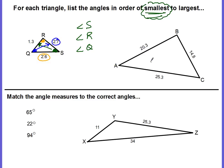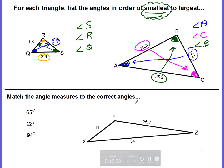Go ahead and try the next example, then come back and check your work. The smallest angle is angle A — the smallest side is 14.8 and the angle opposite that is angle A. The next smallest is angle C, opposite 20.3. The longest side is 25.3 and its angle is angle B, so angle B is the largest. From smallest to largest: angle A, angle C, and angle B.